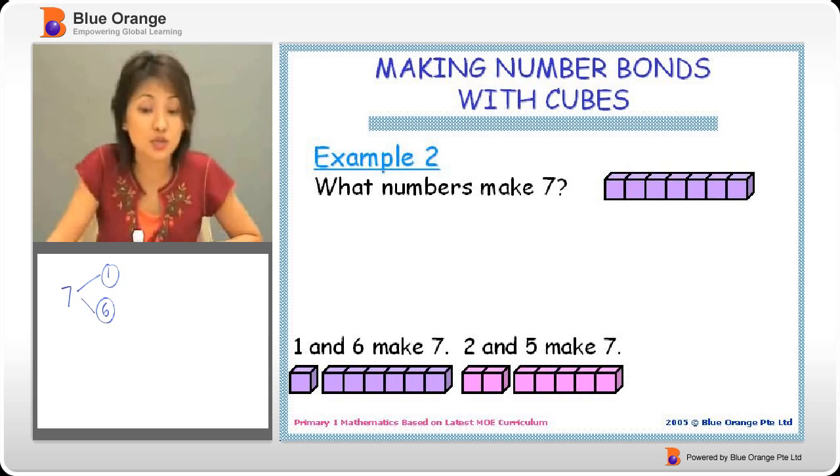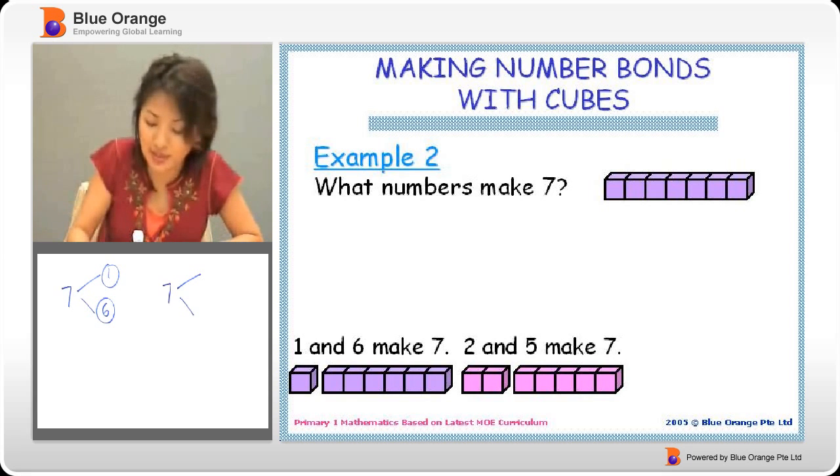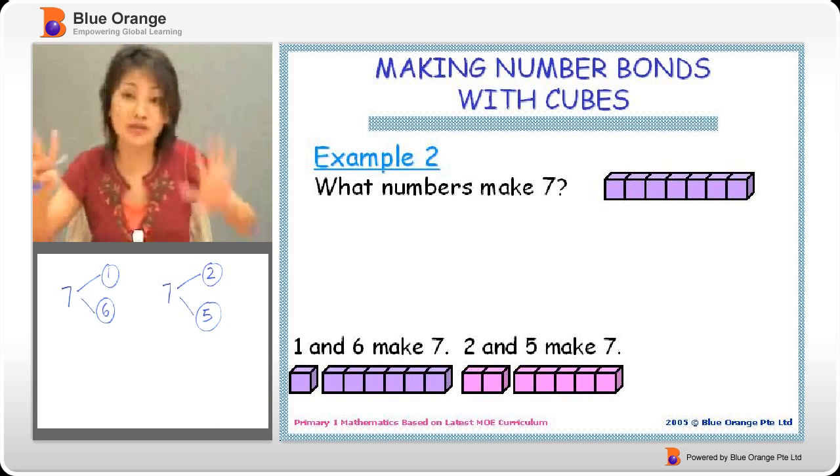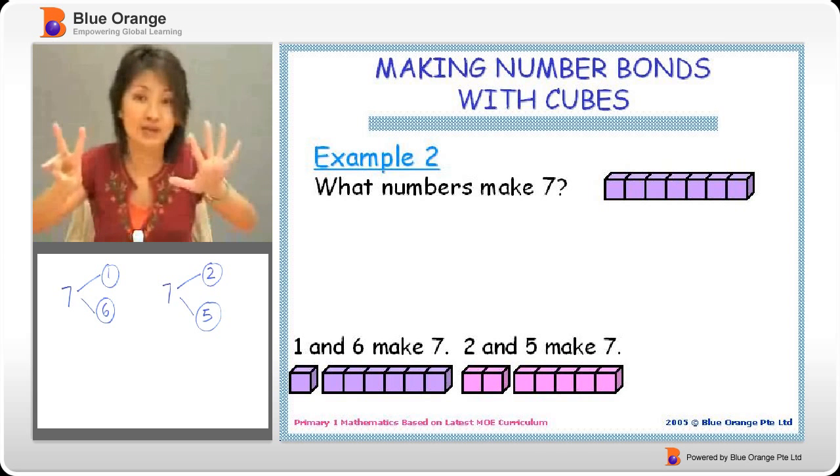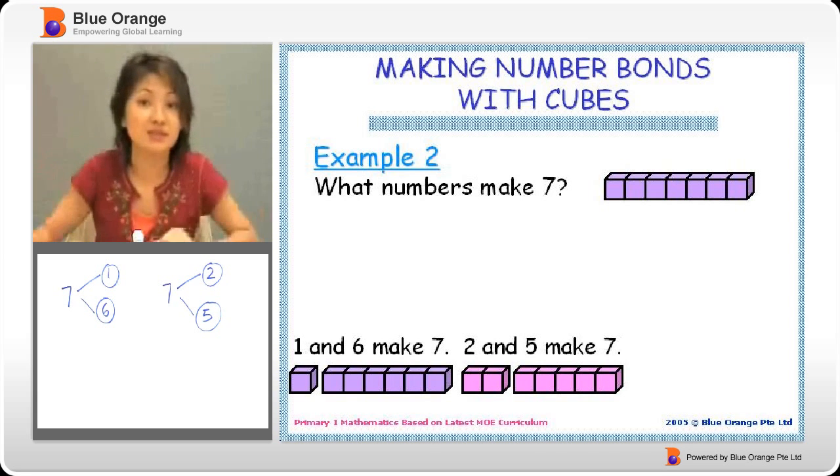Now, we also can say that two and five. Seven can be split into two and five. Because two, if I have two and I have five, I still have seven. See? Two, five, five, six, seven.